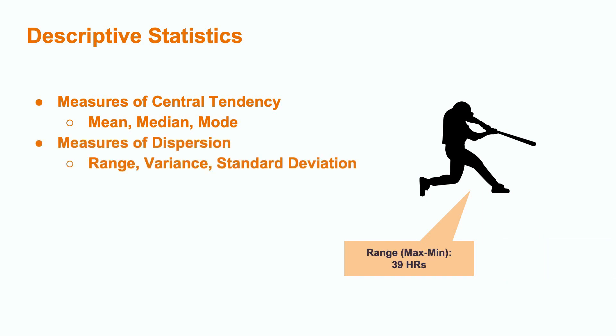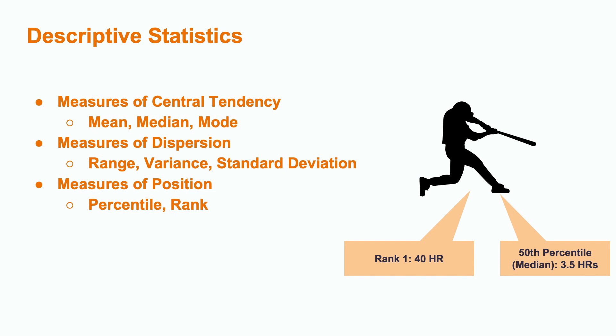There are also measures of dispersion, which discuss how spread out the data is. Range, variance, and standard deviation can all answer questions about this. Range discusses the total amount that a dataset spans, while variance and standard deviation represent how most of the data collects around the median. For example, in our dataset, the range would be equal to the difference between the minimum and maximum number of home runs, which gives us 40 minus 1, or 39. Measures of position can tell you where a data point resides within the dataset. Things like rank and percentile can discuss where a data point places among the other elements in the set. For example, hitting 40 home runs gives someone the top rank in the home run dataset, while it would only take 3.5 home runs to rank in the 50th percentile, which is another way of representing the median.